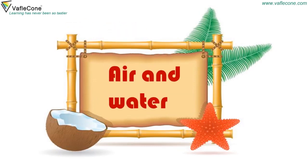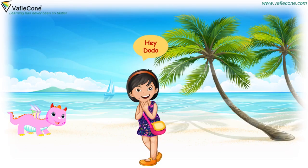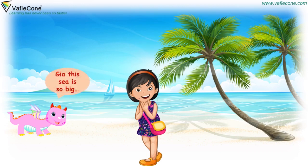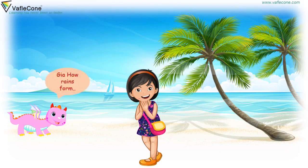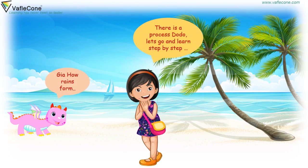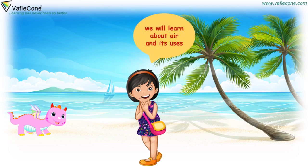Air and Water. Hey, Dodo! Hey, Jiya! This sea is so big! Yeah, Dodo! Jiya, how do rains form? There is a process, Dodo. Let's go and learn step by step. We will learn about air and its uses. Really, Jiya? Let's start then.